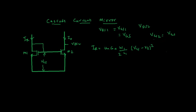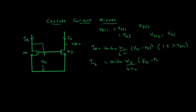In the basic current mirror we ignored the channel length modulation effect, but it will have its own effect. If we don't ignore it, the current equation becomes: IR = (μn·Cox·W1)/(2L1) · (VGS − VT)² · (1 + λ·VDS1). Similarly, IO = (μn·Cox·W2)/(2L2) · (VGS − VT)² · (1 + λ·VDS2).